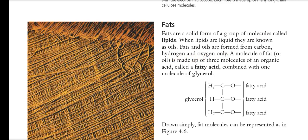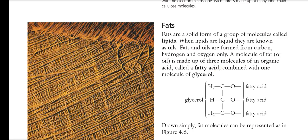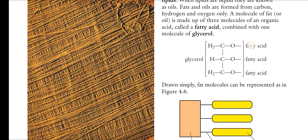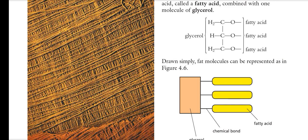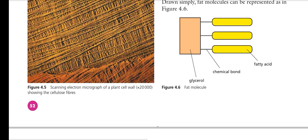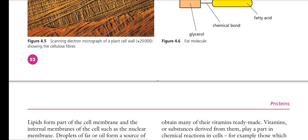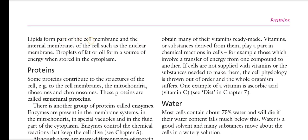Fats and oils are formed from carbon, hydrogen, and oxygen only. A molecule of fat or oil is made up of three molecules of an organic acid called a fatty acid, also known as a free fatty acid, combined with one molecule of glycerol. Glycerol is a compound that contains three OH groups. Three fatty acids combined with glycerol form a structure called triacylglycerol, commonly known as TAG, which is a storage form in the liver.